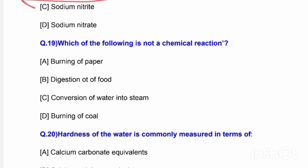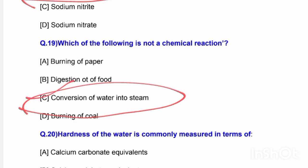Next question: Which of the following is not a chemical reaction? Options are burning of paper, digestion of food, conversion of water into steam, and burning of coal. The correct answer is option C — conversion of water into steam is not a chemical reaction.